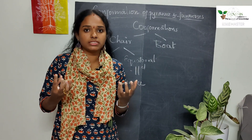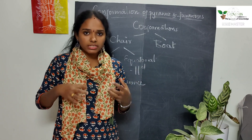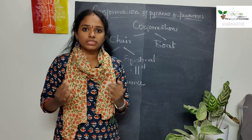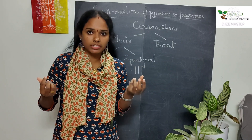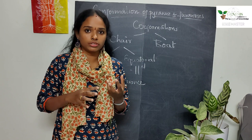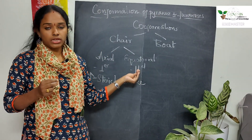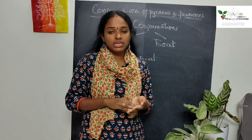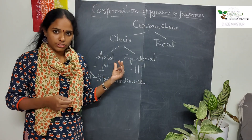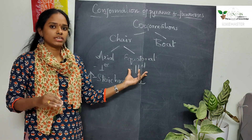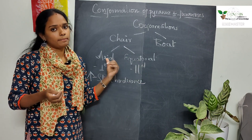Steric hindrance is the repulsion that occurs when two bulkier atoms are in the same plane and very close to each other. Because of this repulsion, the molecule needs more energy to maintain its orientation — it is unstable. Equatorial substituents are parallel to the plane, so they do not cause steric hindrance, need less energy, and are therefore more stable compared to axial substituents.